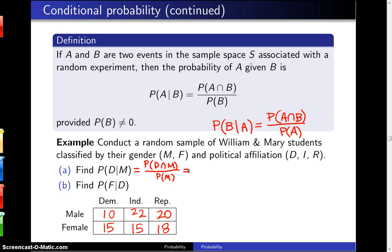Democrat and male is right here. That is 10 out of the 100 students. And the probability of being male, you have to add these three numbers together and the total there is 52.